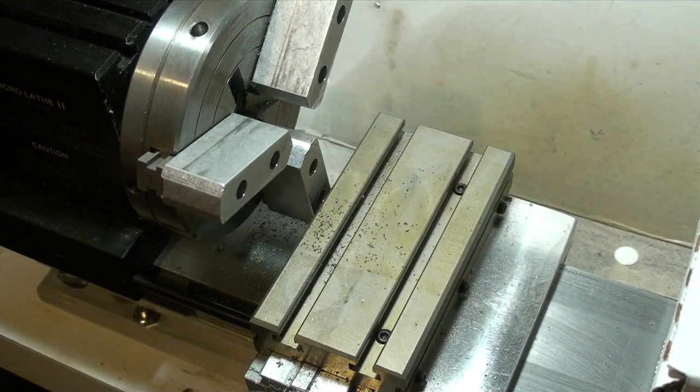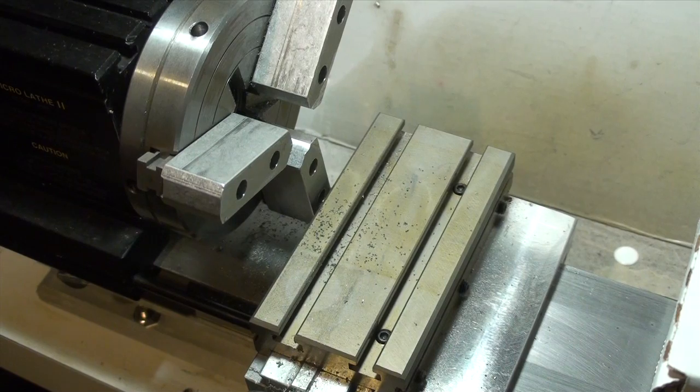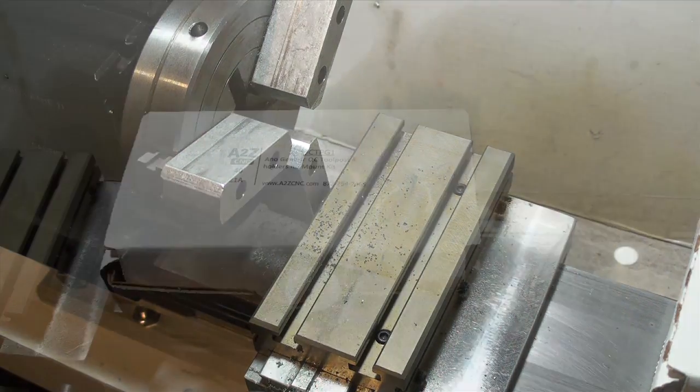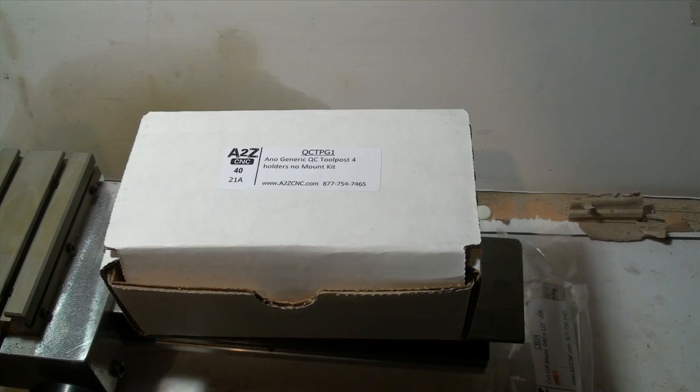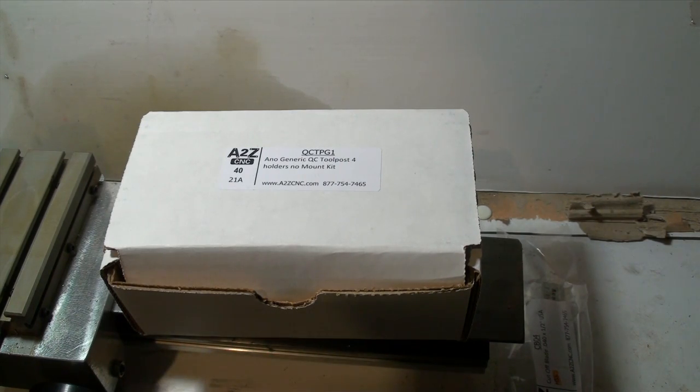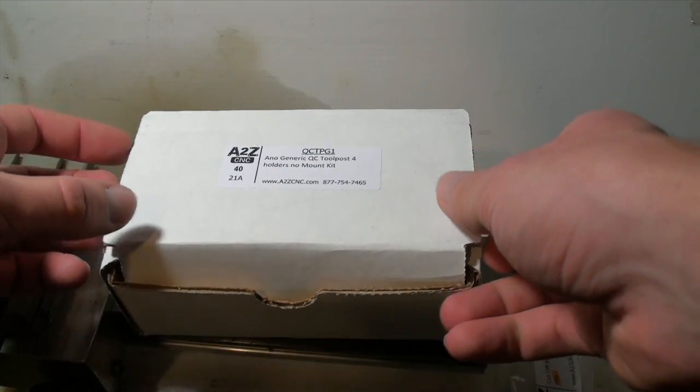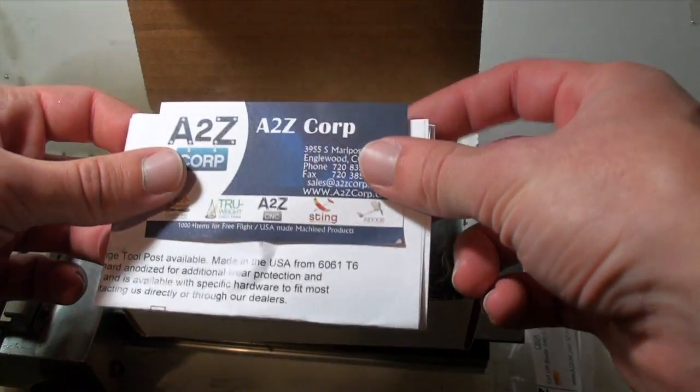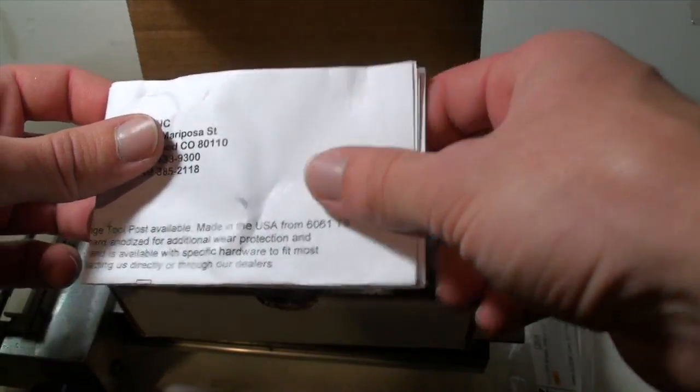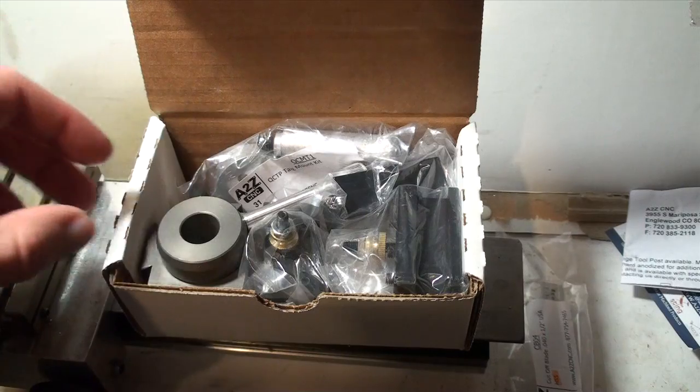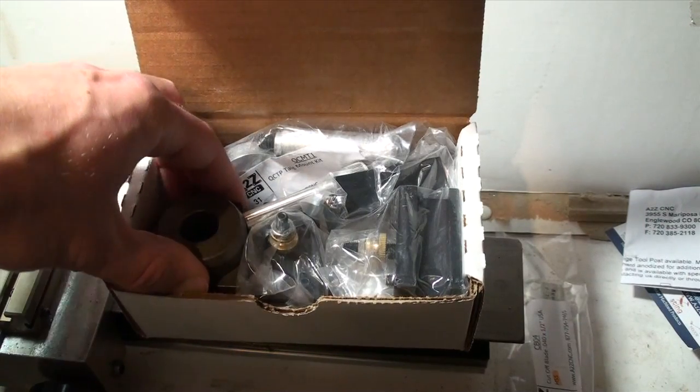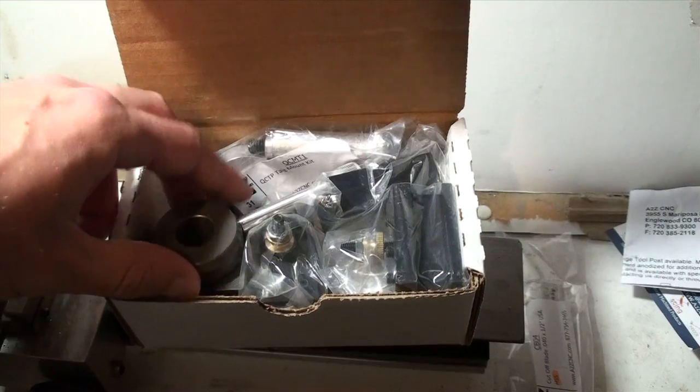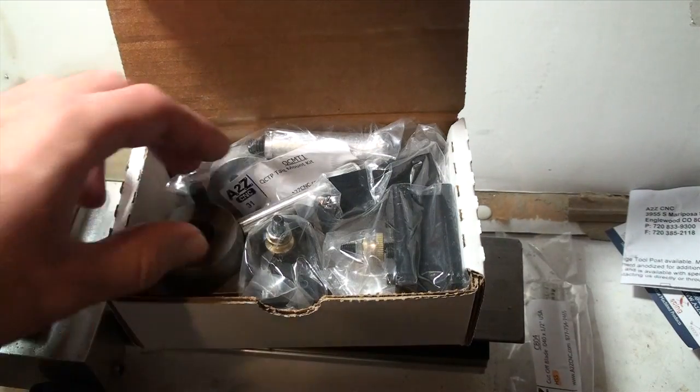A tool post to make this job a bit easier is called a quick change tool post and I have one here. The quick change tool post I have here is from A to Z CNC. Inside you have some information about the company and the product. This tool post is actually made in the USA. It's 6061-T6 aluminum and it's hard anodized.